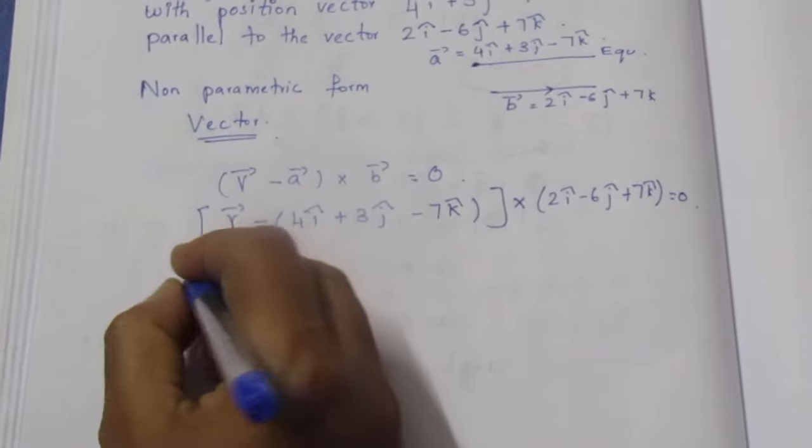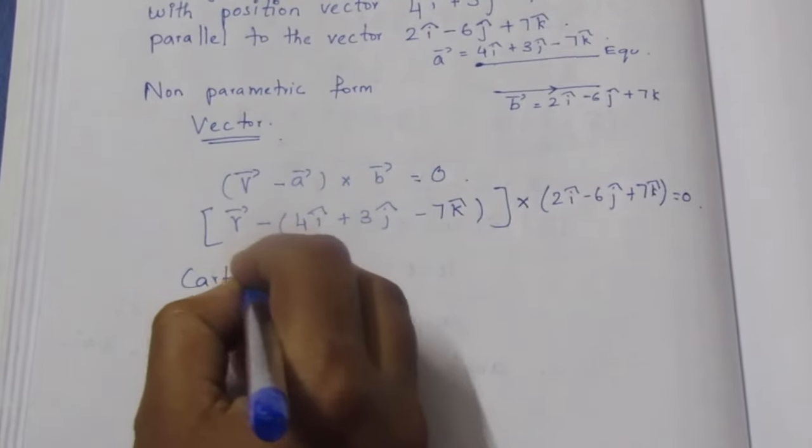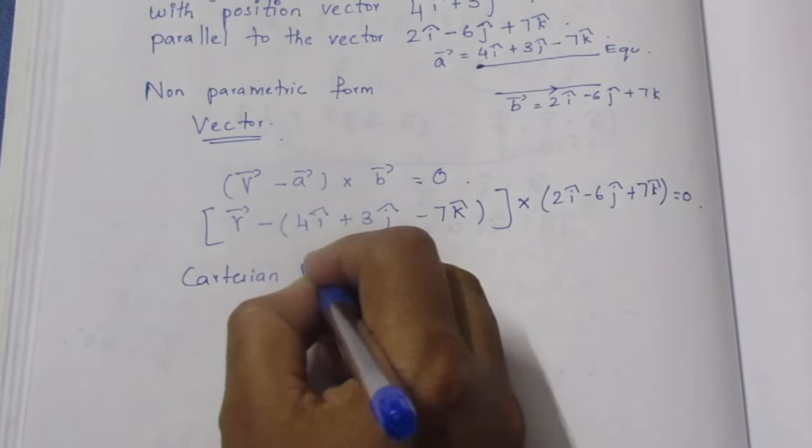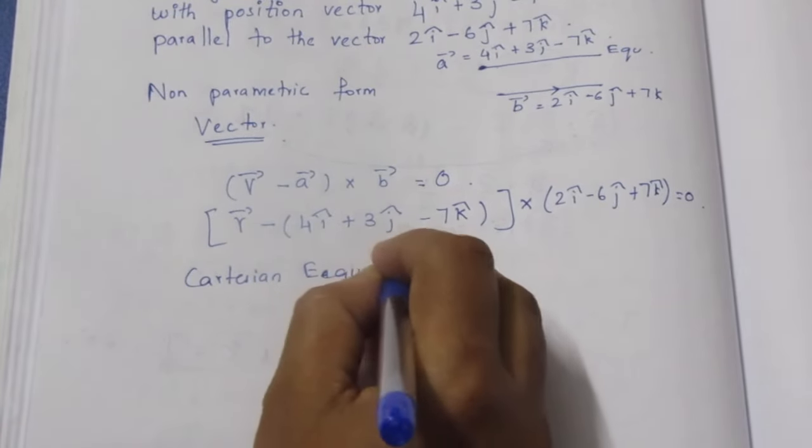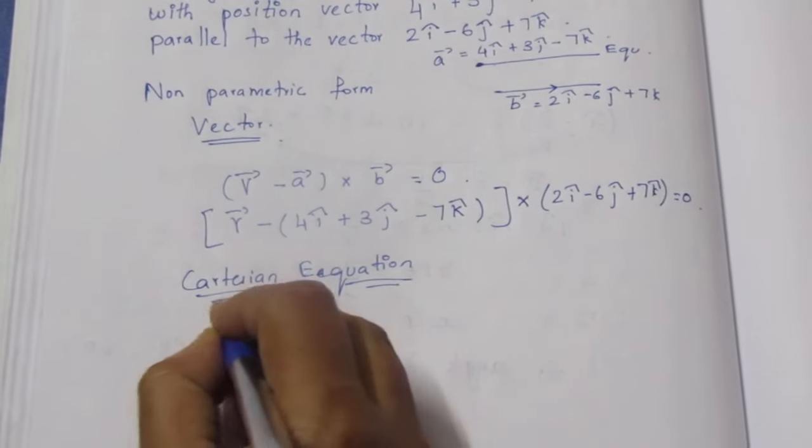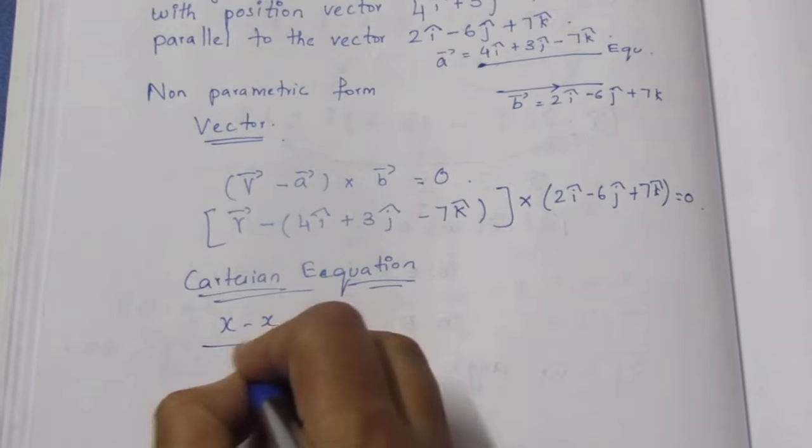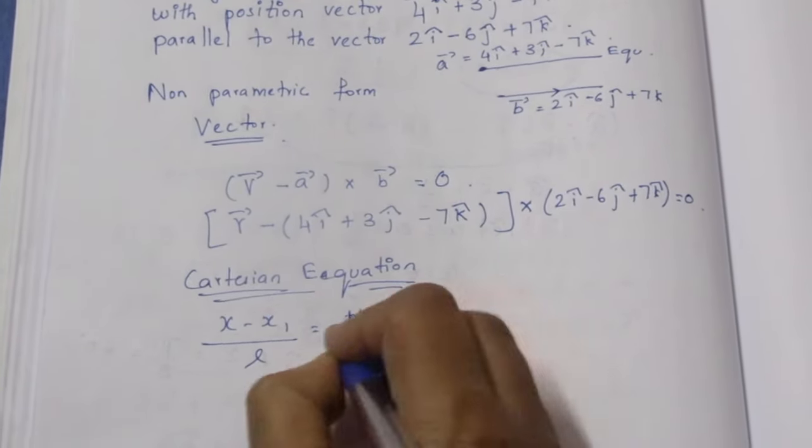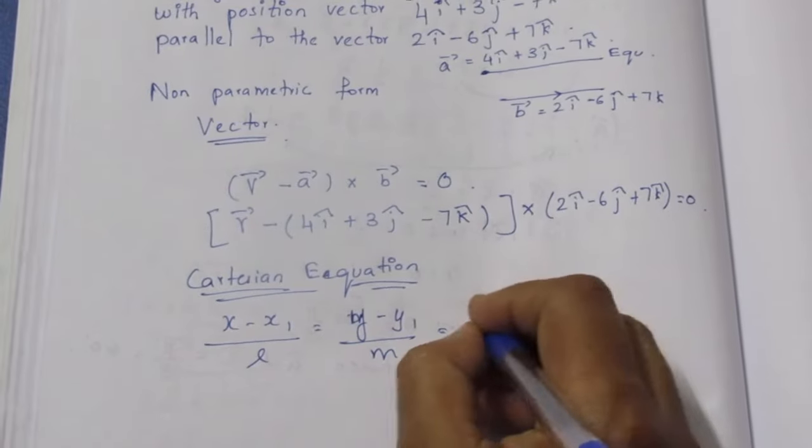Now Cartesian equation. Cartesian equation, we can solve this problem. This is the formula: x minus x1 by l is equal to y minus y1 by m is equal to z minus z1 by n.